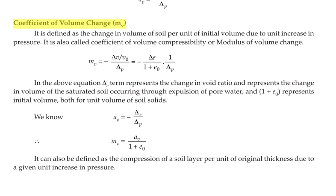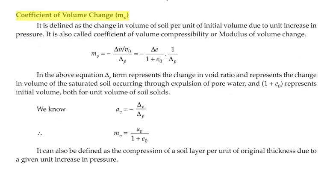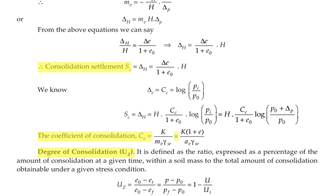Next we are going to see the coefficient of volume change MV. It is the change in volume of soil per unit initial volume due to unit increase in pressure. It is also called the coefficient of volume compressibility. MV = ΔE / [(1 + E0) × ΔP]. We already know AV = −ΔV / ΔP, and MV = AV / (1 + E0). It is also defined as the compression of the soil layer per unit original thickness due to a given unit increase in pressure.